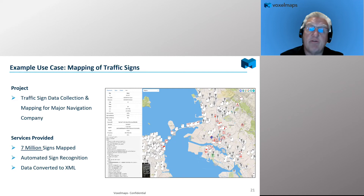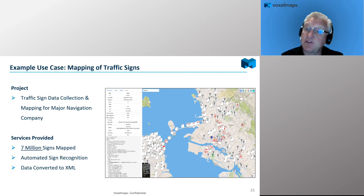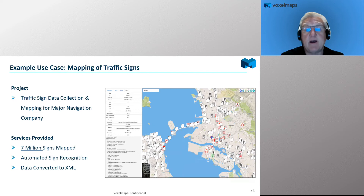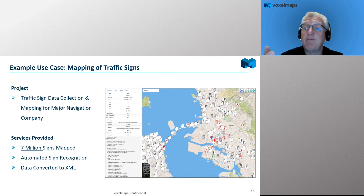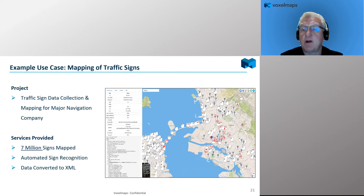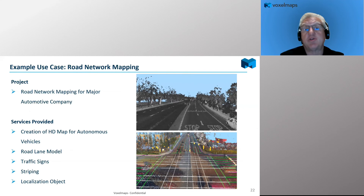Here's a signage inventory use case. We drove many miles of roads and did a traffic sign data collection and mapping for a major navigation company. They were interested not only in extracting the signage but also doing OCR to identify what's on the sign. Seven million signs were mapped with automated sign recognition, and we converted all that data to XML and delivered it. Seven million signs represents roughly 20,000 miles of roadway if you had a sign every 15 feet — we have extensive experience doing very large data collection requirements.